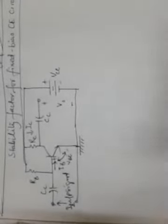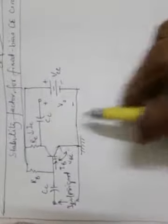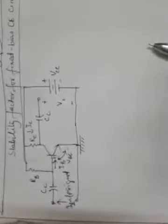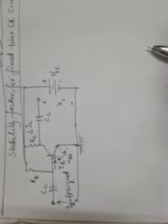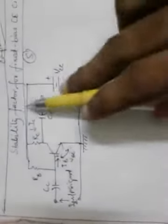Hello everybody. In this lecture we will be discussing about the stability factor for fixed bias common emitter circuit. This is the basic fixed biasing circuit and we will be calculating the value of S, the stability factor denoted by S.